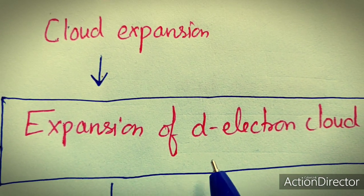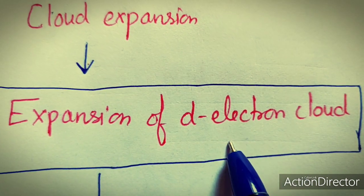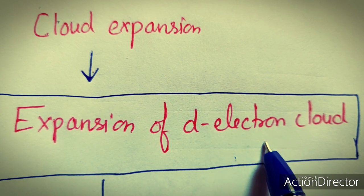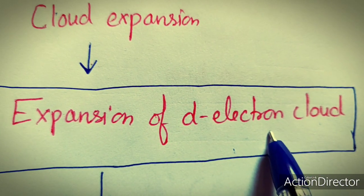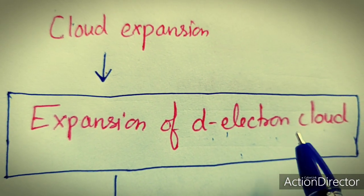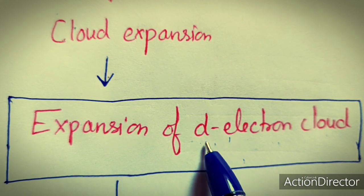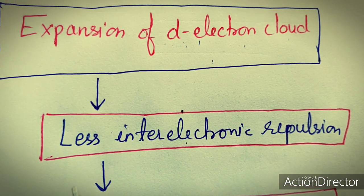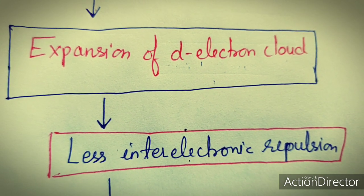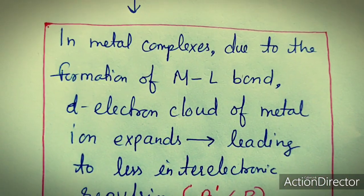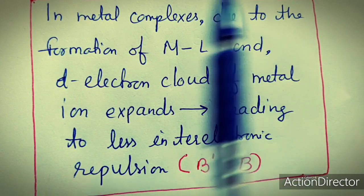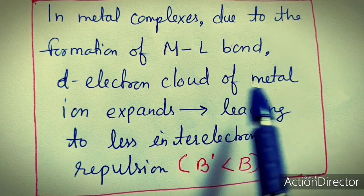In the case of the d-electron cloud, if we consider a free metal ion, these electrons reside only in the d orbitals of the metal ion. If there is any possibility to expand their cloud, then there will be less chance of repulsion — inter-electronic repulsion will decrease. If the electron cloud expands by any means, inter-electronic repulsion decreases. In metal complexes, this can be achieved by the formation of the metal-ligand (ML) bond, which causes the d-electron cloud of the metal ion to expand.